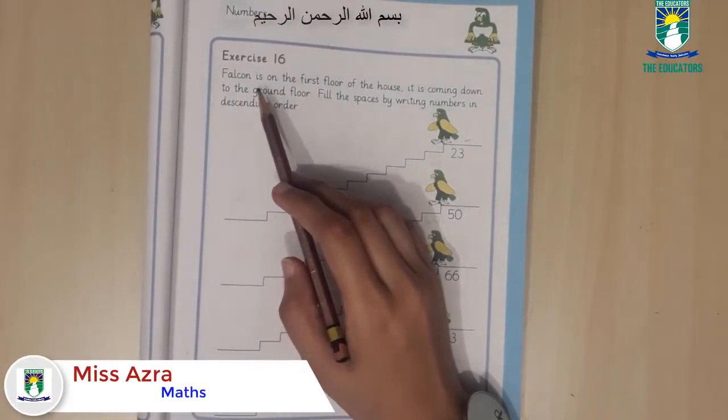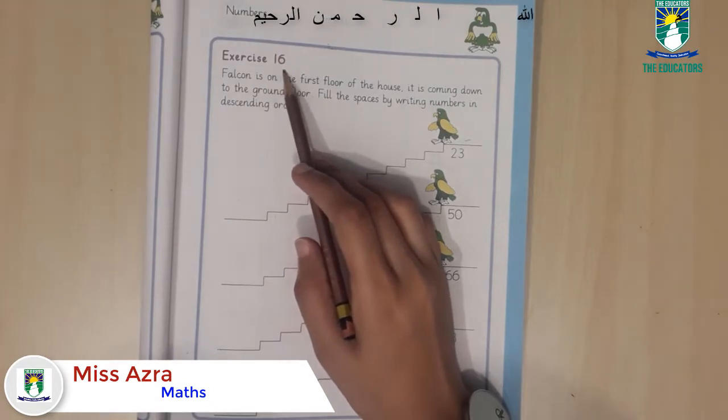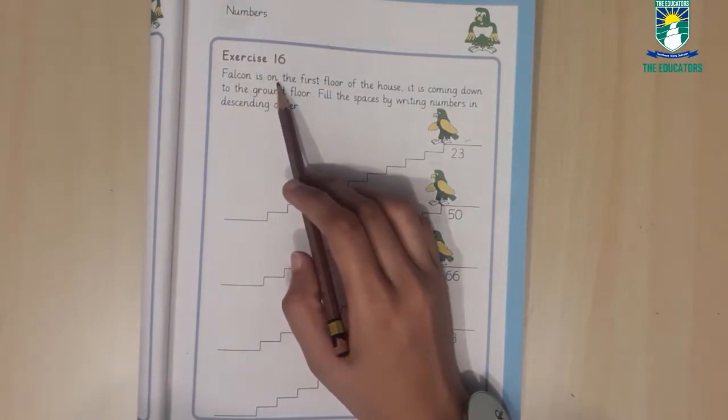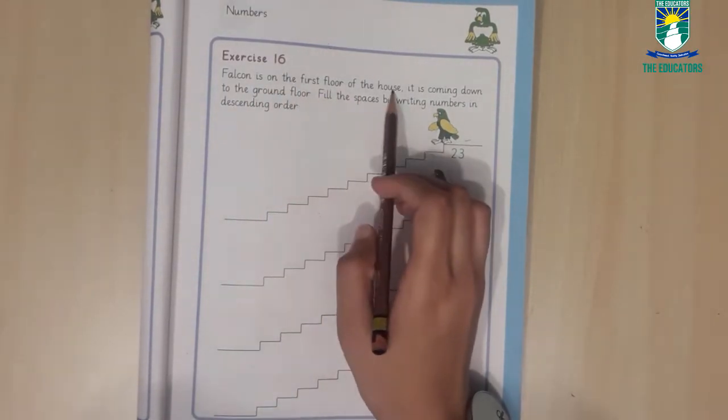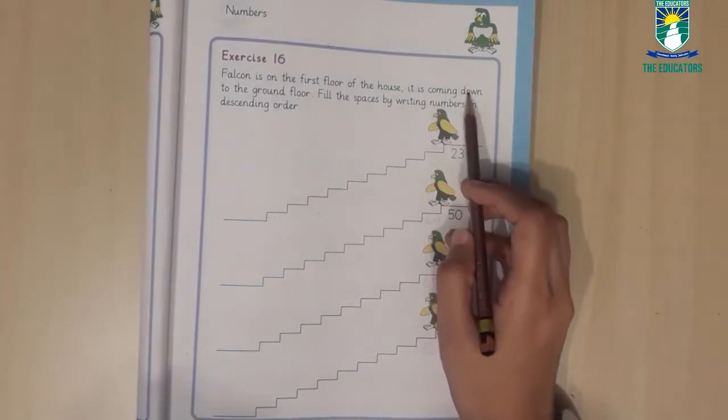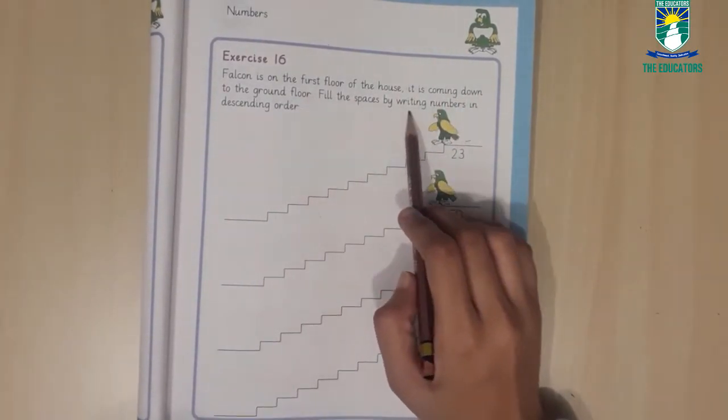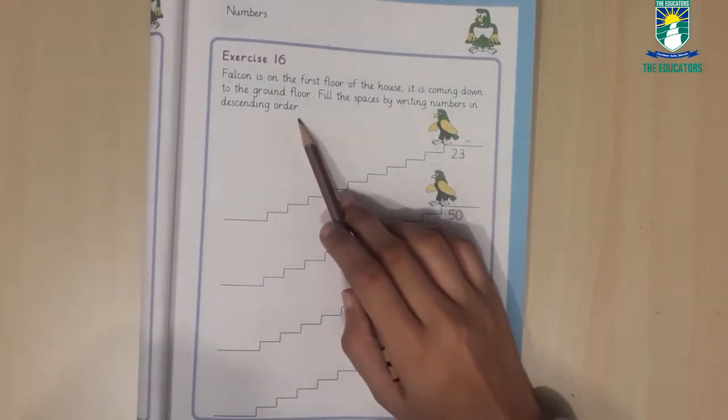Asalaamu alaikum class 1. Today we will solve exercise number 16. Falcon is on the first floor of the house. It is coming down to the ground floor. Fill the space by writing number in descending order.